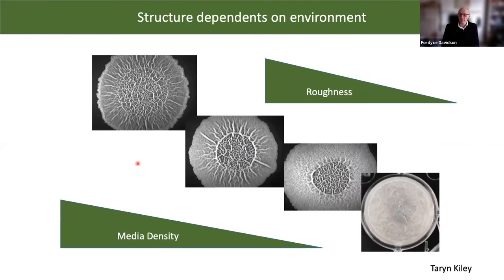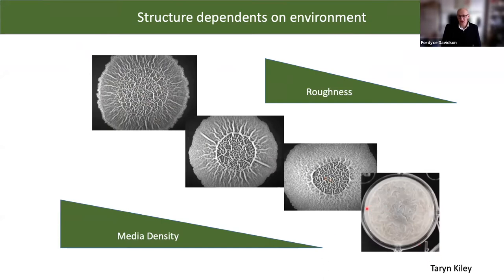Structure also depends on the environment. We did some simple experiments in the lab where we grew exactly the same biofilm on agars that were just more and more loose — containing more and more water, more and more slippery. What you can see is that from quite dense media, you get very wrinkled structures. As you decrease the media density, you get less and less wrinkled structures, until the extreme case where if you grow a biofilm on the surface of water or liquid solution, you get what's called a pellicle — almost completely flat.